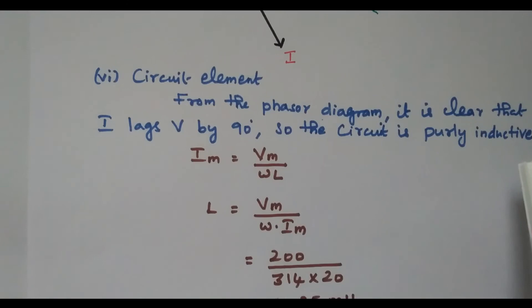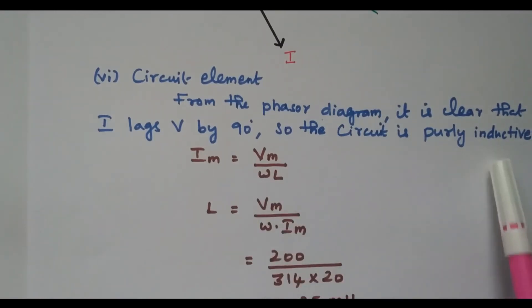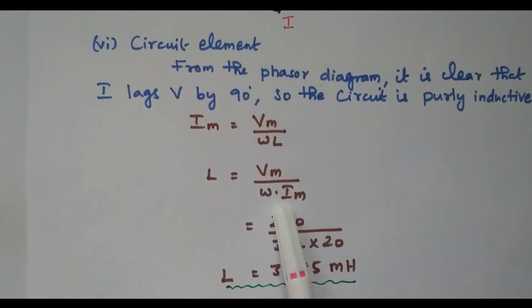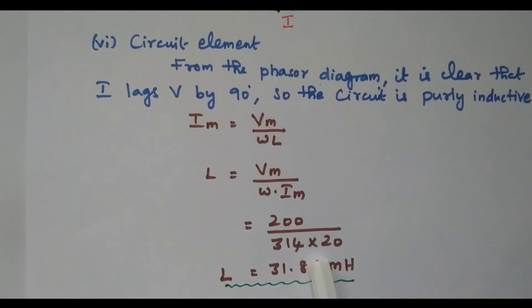In the beginning of the problem it was given as a general circuit, and we needed to identify what type of circuit it is. Now we identified it is an inductive circuit. The circuit element is inductance. Using Im = Vm / (ωL), we find L = Vm / (ω × Im) = 200 / (314 × 20) = 31.85 milli-henry. In this video we discussed solved problems based on a circuit containing only an inductor — three different problems were solved.